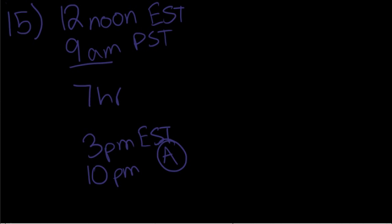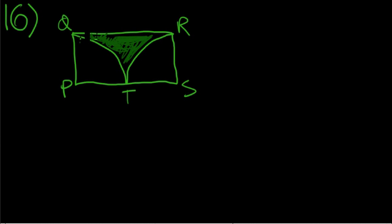And now number 16. So, in rectangle P, Q, R, S above, arcs Q, T, and R, T are quarter circles with centers at P and S respectively. If the radius of each quarter circle is 1, what is the area of the shaded region? So, oh dear, why does it look like that? Okay, so the radius of these quarter circles is 1, 1, 1, 1. And so the length of line P, S, is 2.